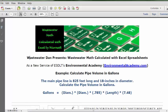Today's example: calculate pipe volume in gallons. Today's problem reads, the main pipeline is 825 feet long and 18 inches in diameter. Calculate the pipe volume in gallons.